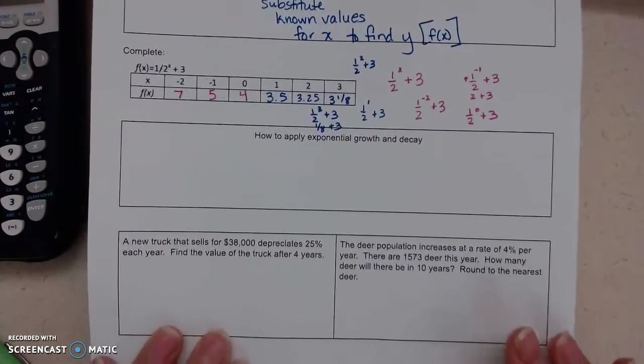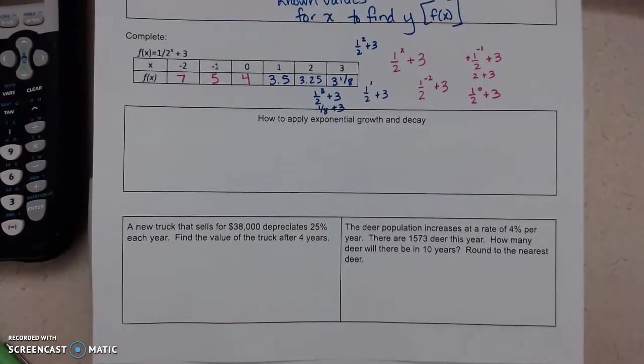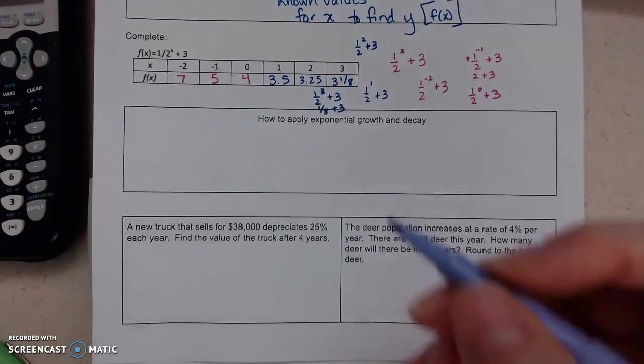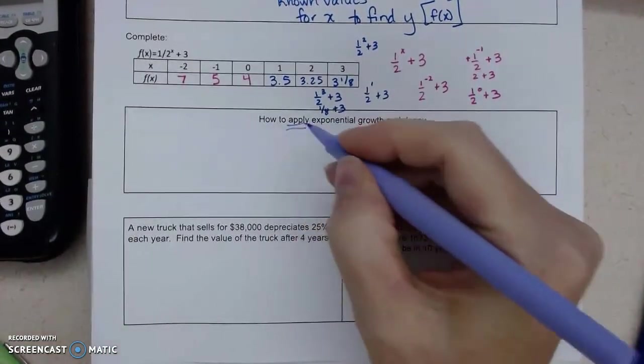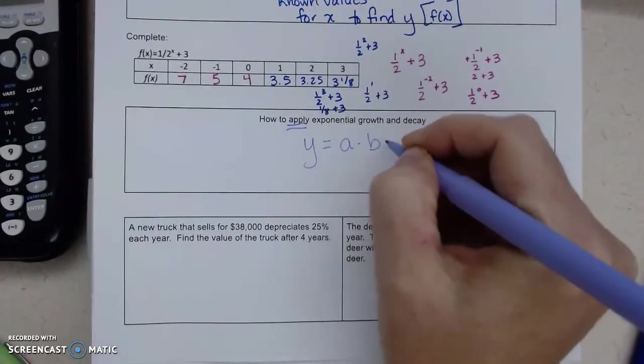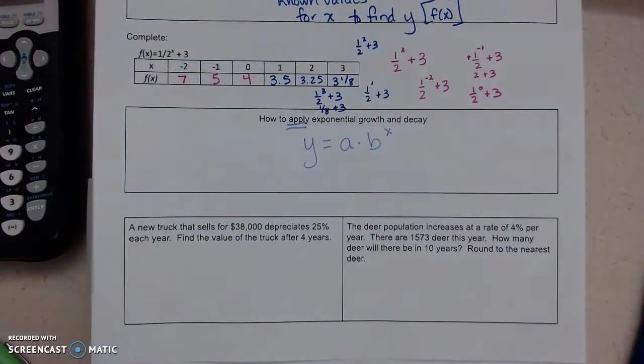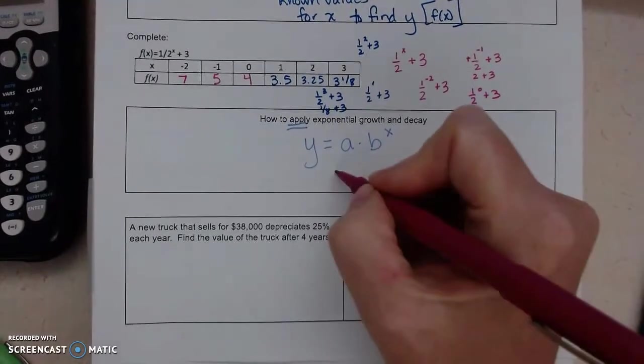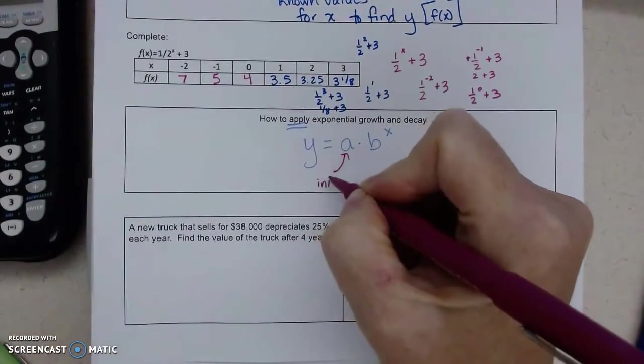Okay, so the last topic is going to be exploring exponential functions. So if I want to apply them, I need to know how to use the general formula: y equals a times b to the x. So from the first section, a was the initial amount.